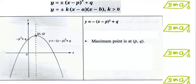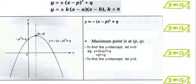For this type of equation, where the coefficient of x squared is negative, the shape of the graph would resemble a sad face. Its maximum point would be at (p, q). Similar to the first case, to find the y-intercept, we simply let x equal to 0, and to find the x-intercept, we let y equal to 0.